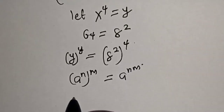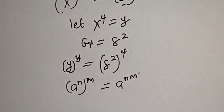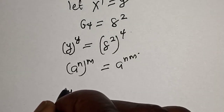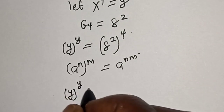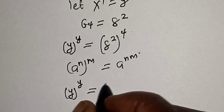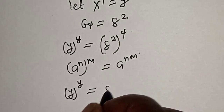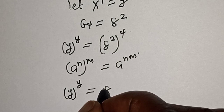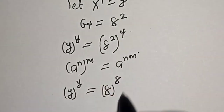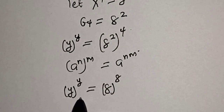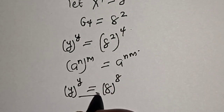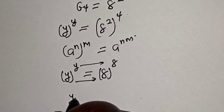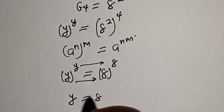Then this becomes y raised to power y is equal to h raised to power 2 times 4, that is h raised to power 8. Now, by comparing, this side is equal to this side and this is equal to this. Therefore, y is equal to h.